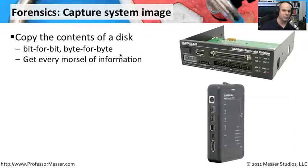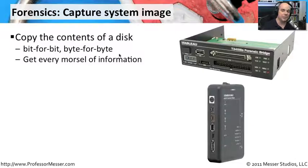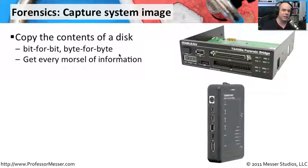Sometimes it's called a byte-for-byte copy, which means we're going to every bit on the drive and copying exactly the contents of that drive from one drive to another. We aren't just copying files from point A to point B — we're copying every single bit on that drive and duplicating it on an image we're creating. We want to get every single bit of data we possibly can.